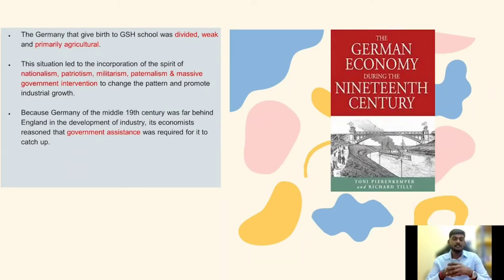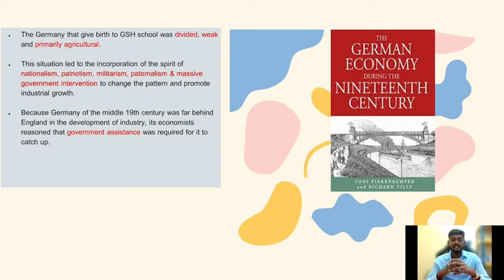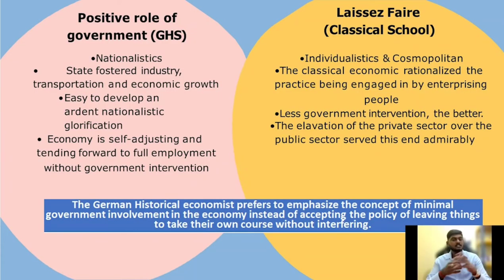The Germany that gave birth to the historical school was divided, weak, and primarily agricultural. Nationalism, federalism, militarism, paternalism, devotion to duty, hard work, and massive government intervention all combined to promote industrial growth. Because Germany in the mid-19th century was very far behind England in industrial development, there was reason to believe government assistance was required for it to catch up. German historical economists generally emphasized the positive role of government in the economy instead of accepting the classical concept of laissez-faire.